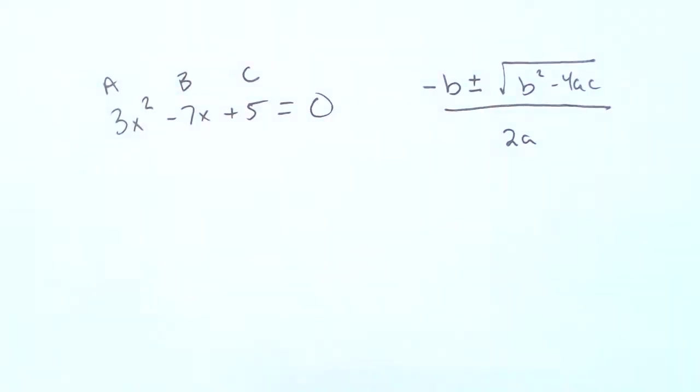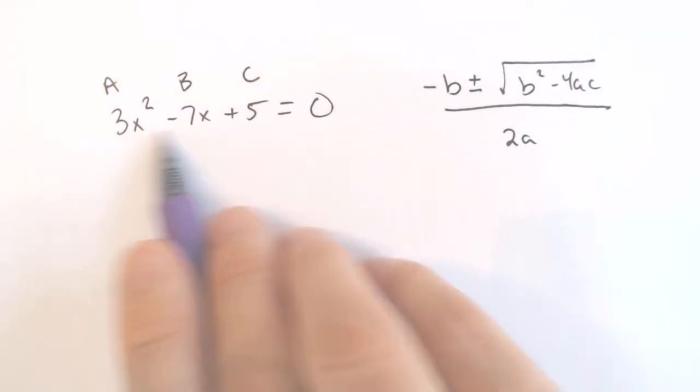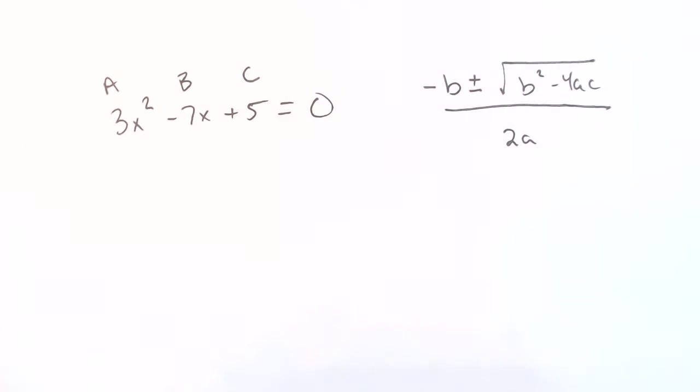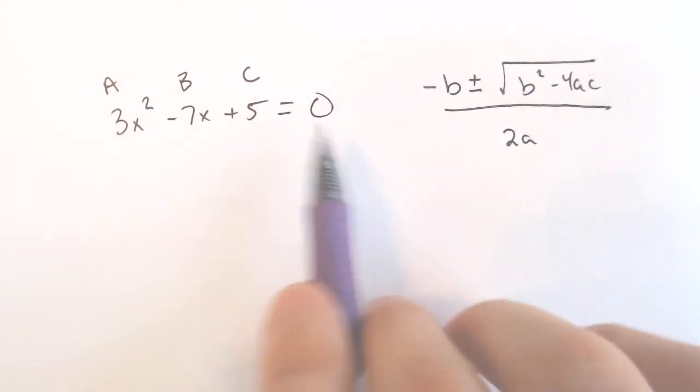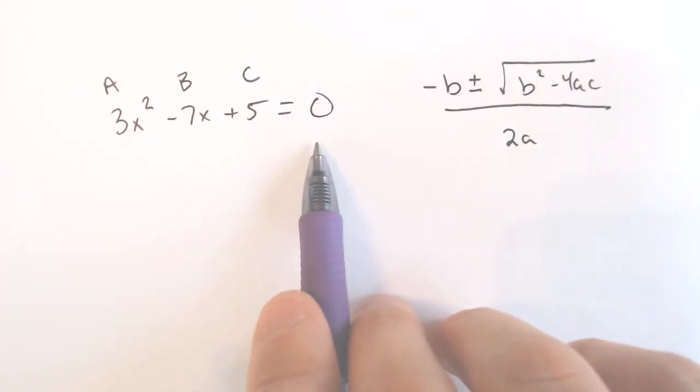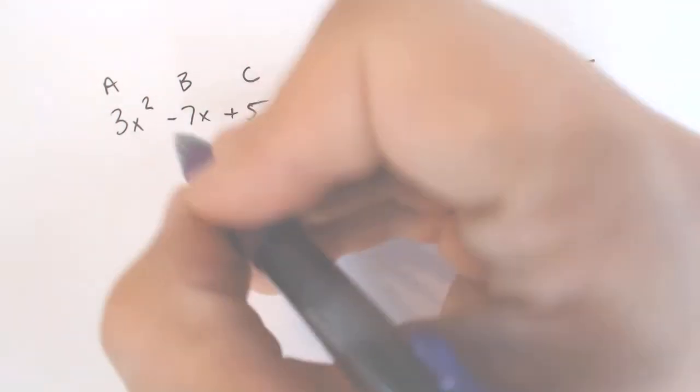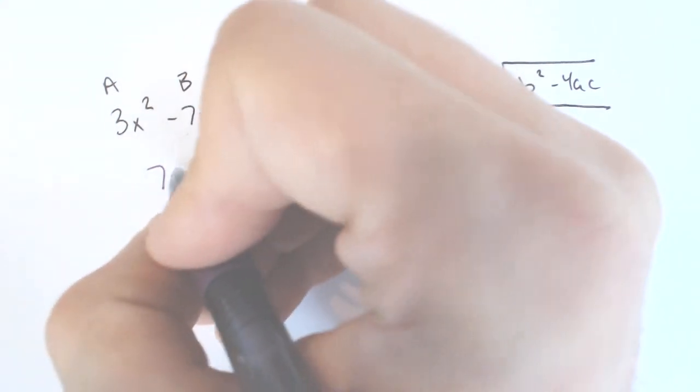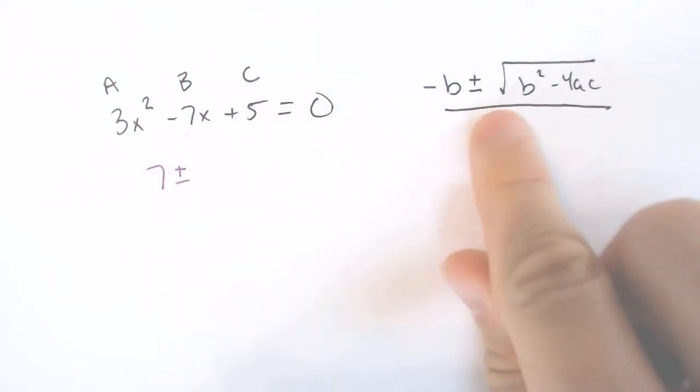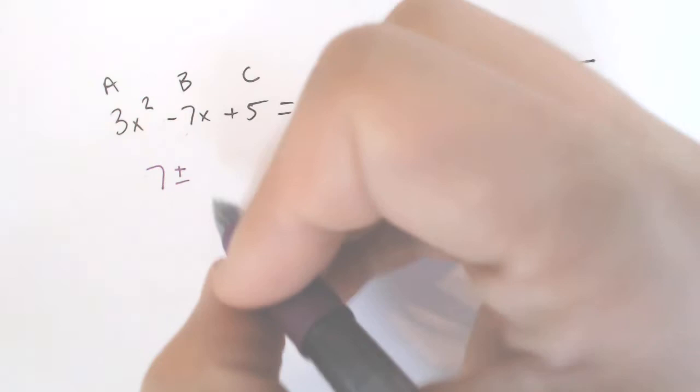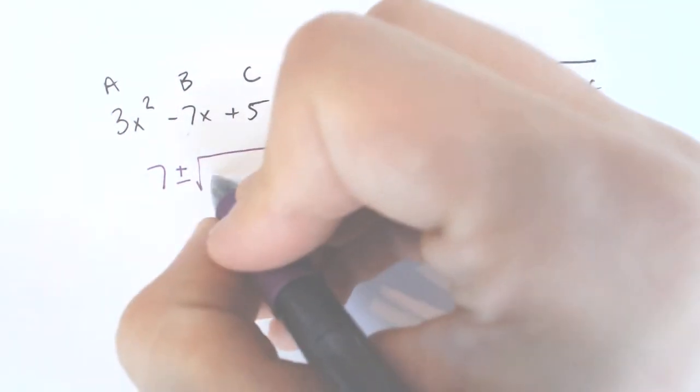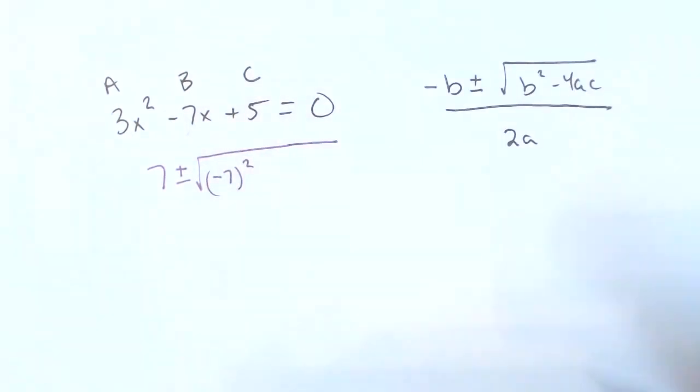Your a, your b, and your c are the numbers in front of the x², the x and the plain old number respectively. You do need to make sure it is equal to 0, and then you just begin. So negative b, if b is already negative 7, would be positive 7, because negative negative 7 makes positive 7.